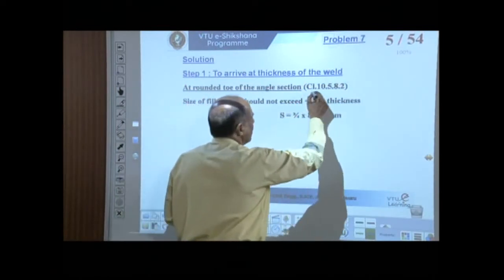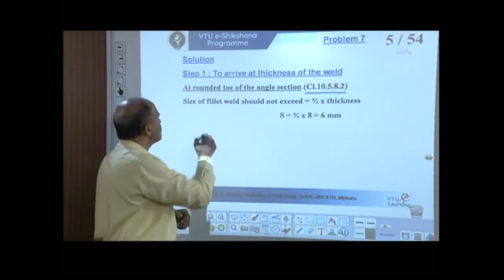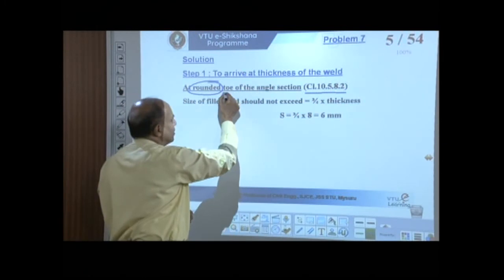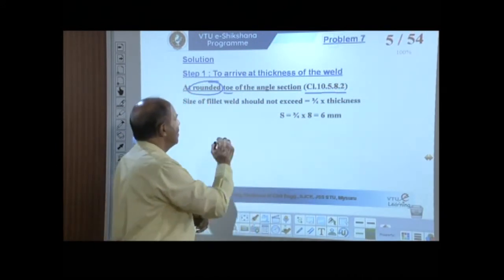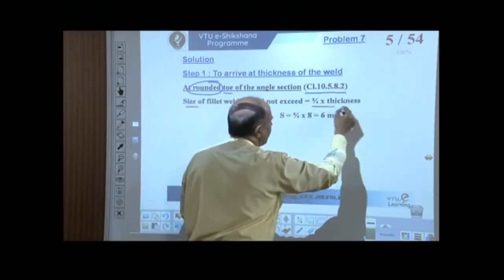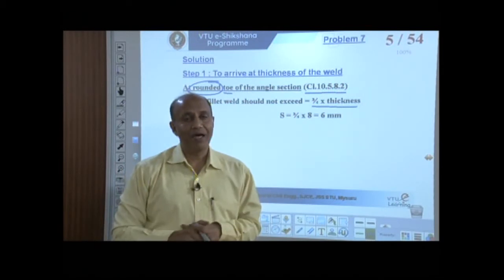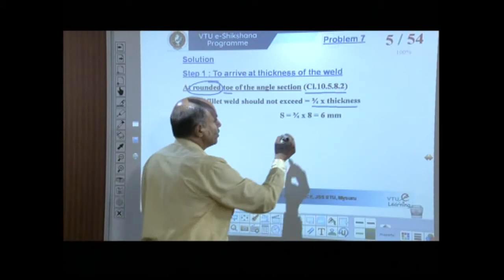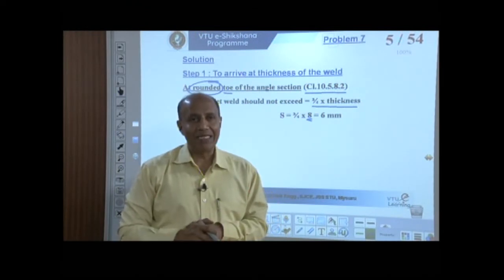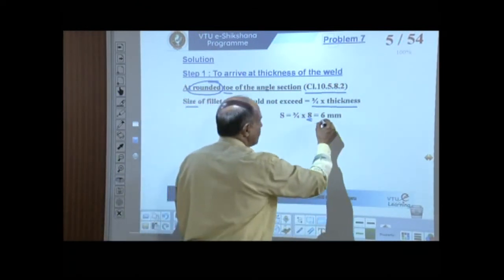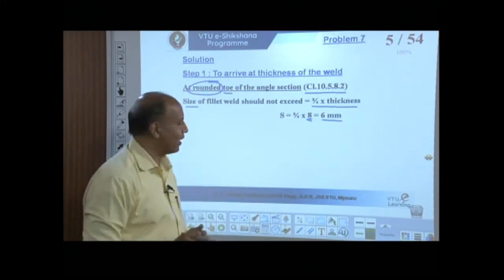We look at clause 10.5.8.2, which deals with a rounded edge criterion. Whenever we are trying to weld around a rounded edge, the size of the weld should not be more than 3/4 of the thickness of the angle. The angle thickness is 8 mm, so 3/4 of 8 mm is 6 mm. At no cost should the size of the weld exceed 6 millimeters — this is from the first criterion.